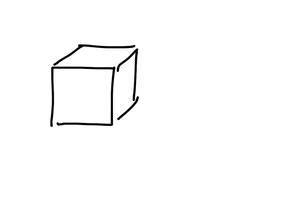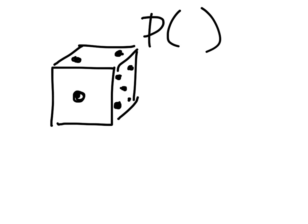Let's look at one more example — a six-sided fair number cube. Sometimes they use dots. What are the chances that you would roll a four on this number cube? Well, theoretically, we haven't rolled it, we just looked at it. There are six different sides, and how many of those sides have a four? One of them does. So this would be considered theoretical probability.